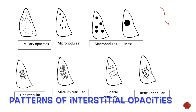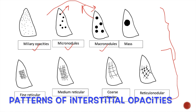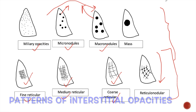Now look at the different patterns of interstitial opacities. These opacities may occur in the form of nodules, which are rounded opacities or dots of various sizes, named according to size — miliary opacities, micronodules, and macronodules. The next form of interstitial opacities are reticulae, which are net-like opacities. They are also of various sizes: fine reticular, medium reticular, and coarse reticular types. When nodules and reticulae are seen together, these are known as reticulonodular opacities.